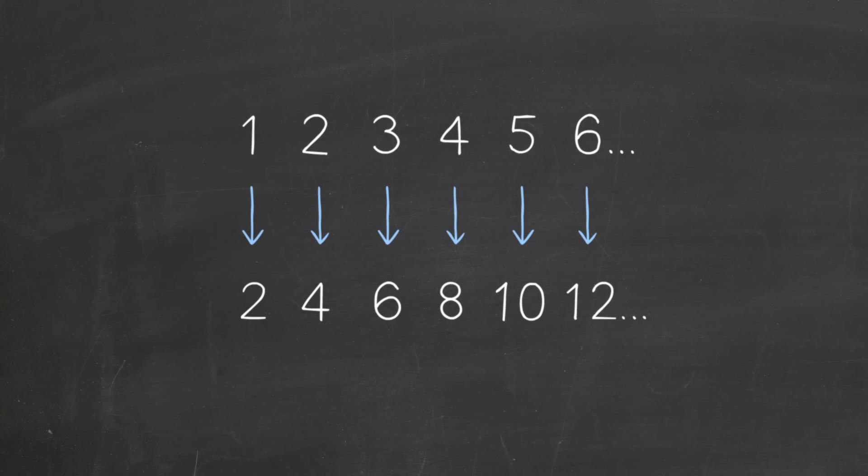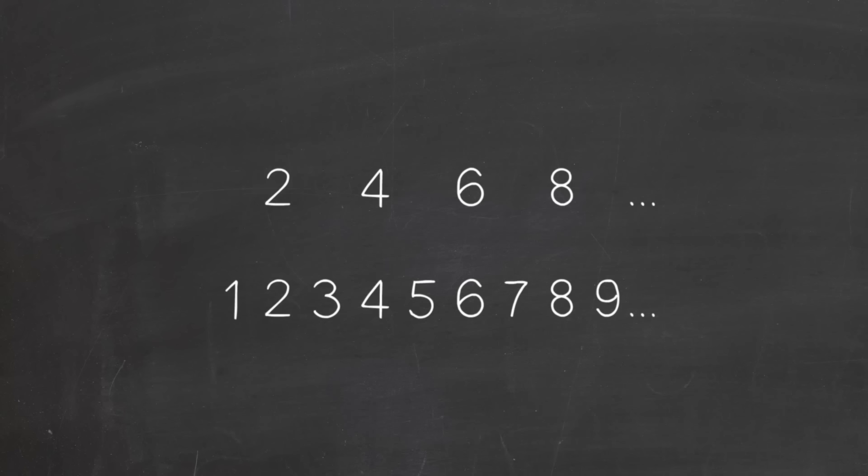So my fourth grade teacher showed us the whole numbers laid out in a row, and below each we have its double. As you can see, the bottom row contains all the even numbers, and we have a one-to-one match. That is, there are as many even numbers as there are numbers.